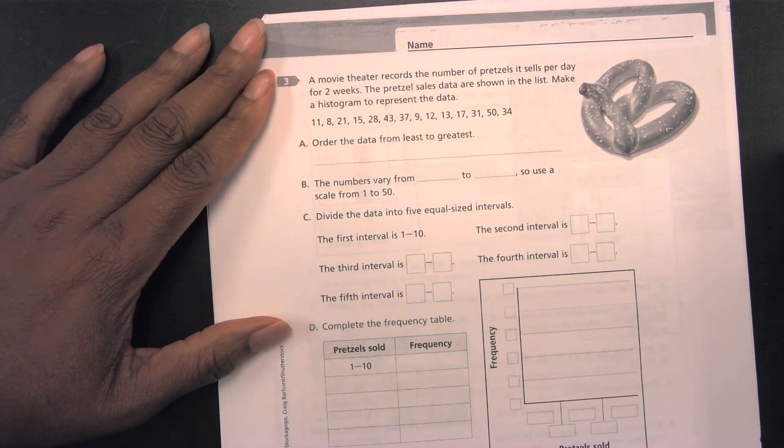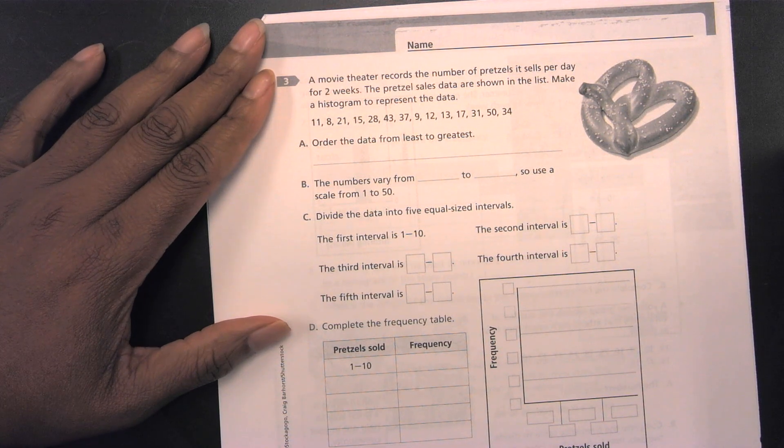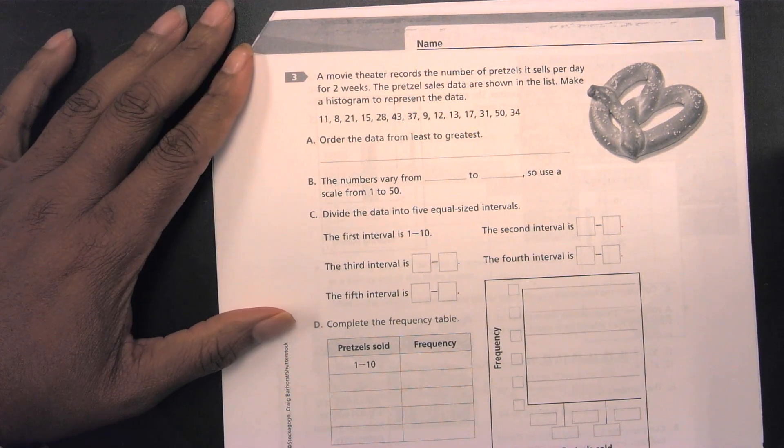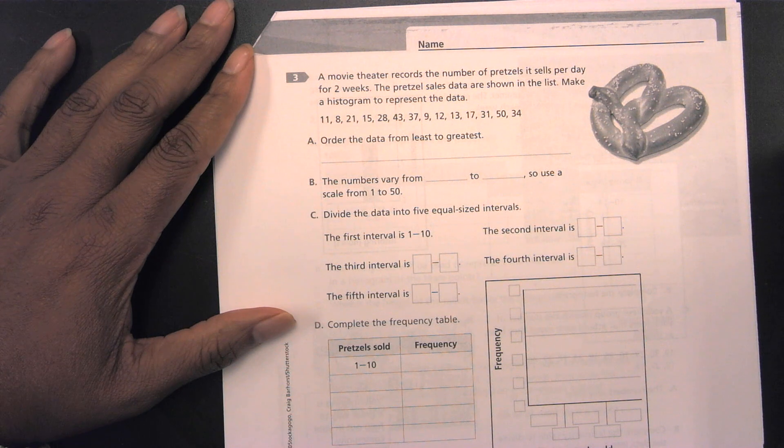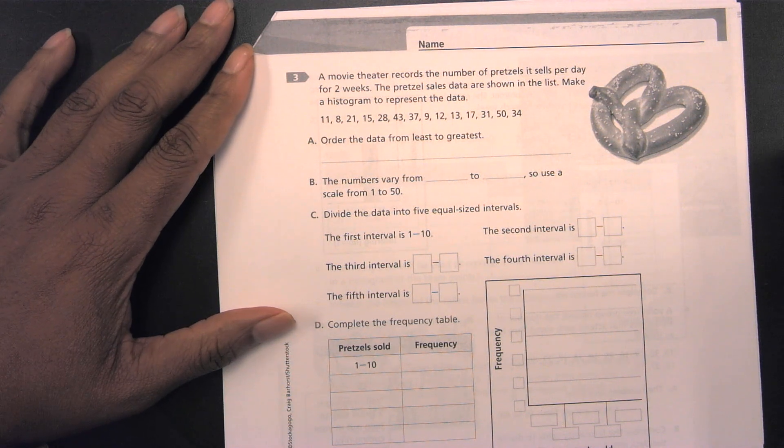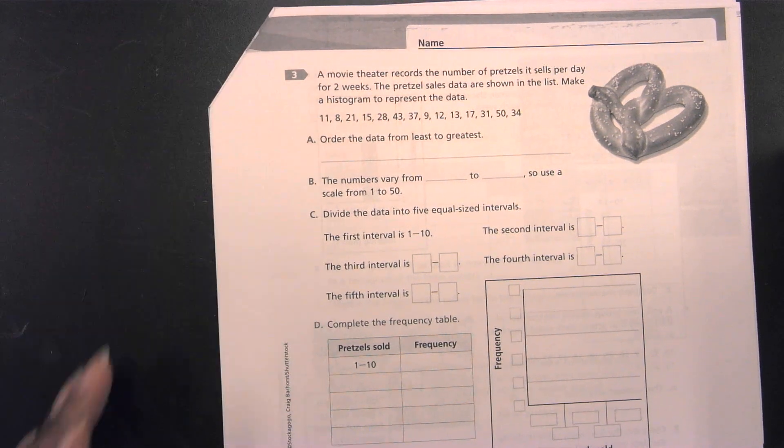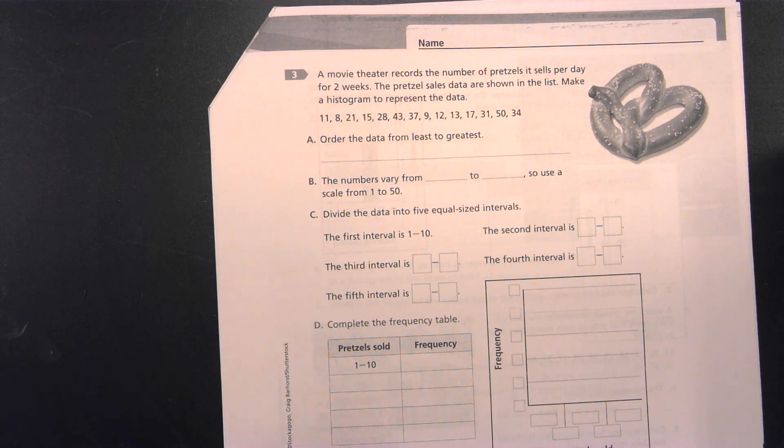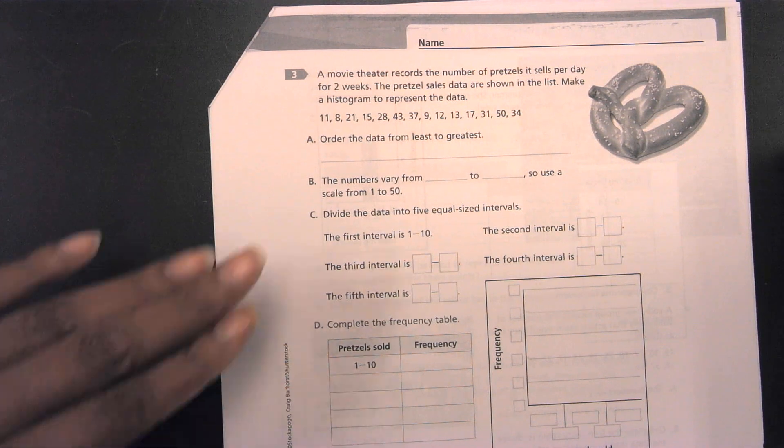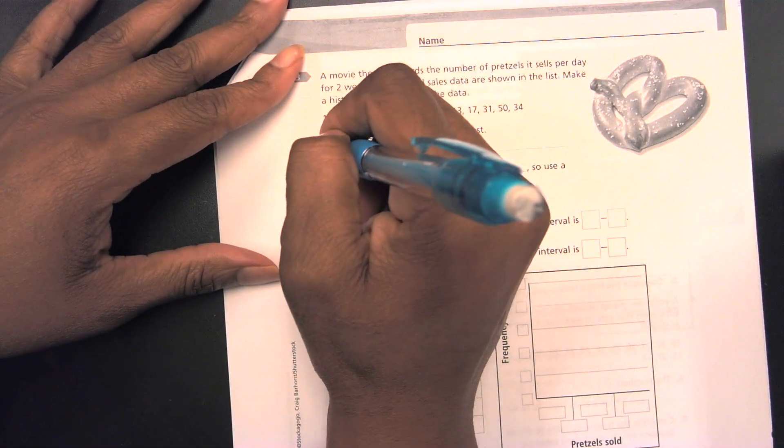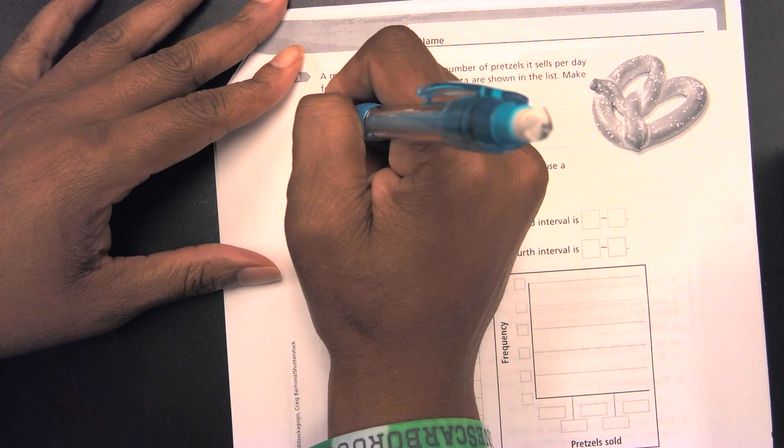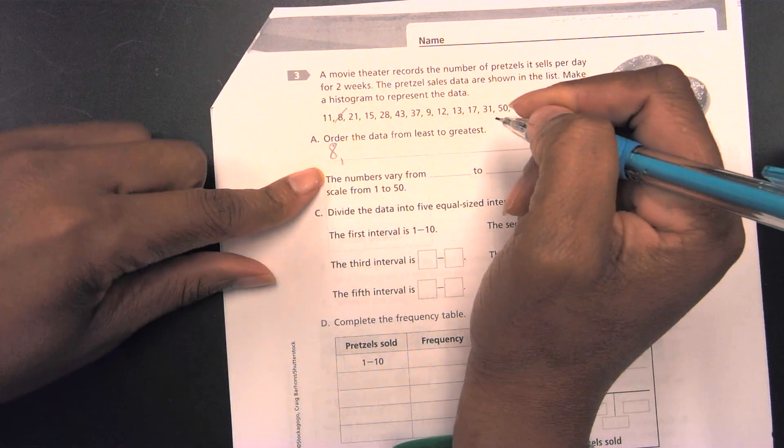A movie theater records the number of pretzel sales per day for two weeks. The pretzel sales data are shown in the list. Make a histogram to represent the data. So, first thing, hopefully you guys remember this for your upcoming test, we need to put the data in order from least to greatest. Starting with our smallest number, it looks like it's going to be 8. Then, it looks like we have 9.